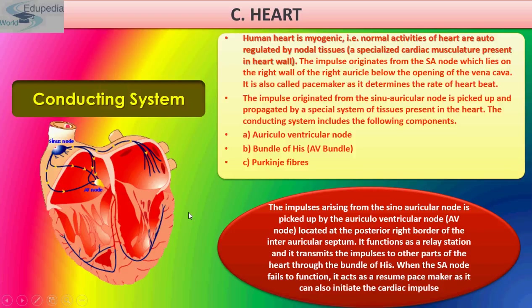Now, let's discuss the conducting system of the heart. The human heart is a myogenic organ — that is, the muscles of the heart are stimulated by their own mechanism and not necessarily by impulses from the brain. However, the heart is supplied with sympathetic and parasympathetic nerves, and their impulses can either stimulate or suppress the rhythm of the heart. The heart has special conducting tissue concerned with stimulation and regulation of heartbeat, called nodal tissue.